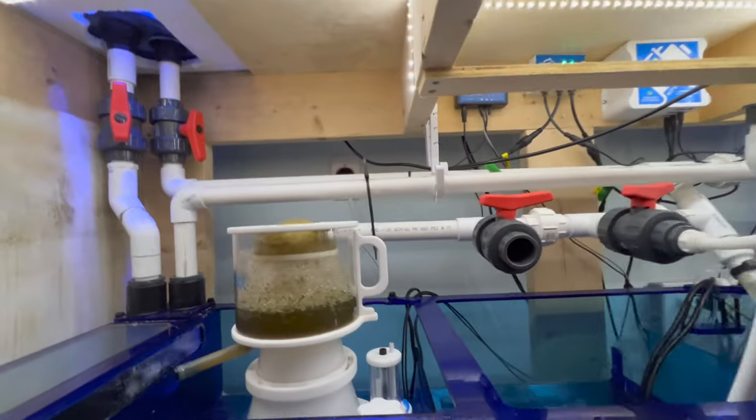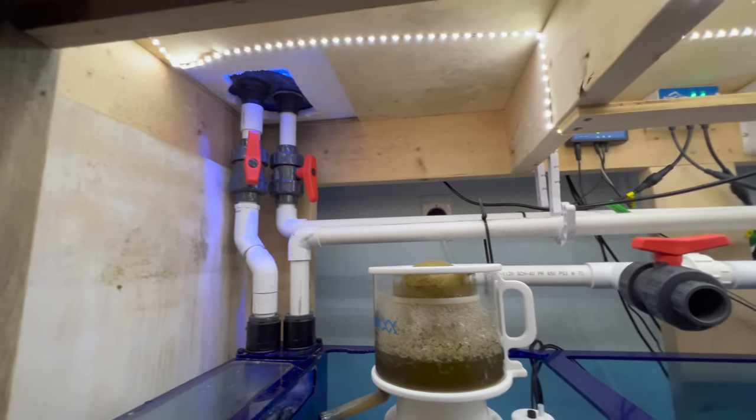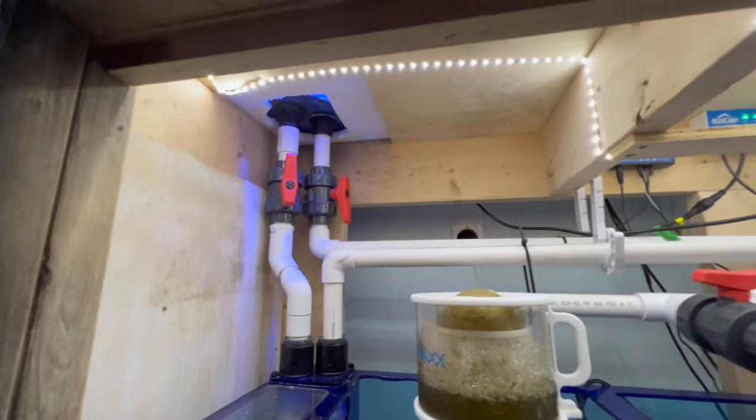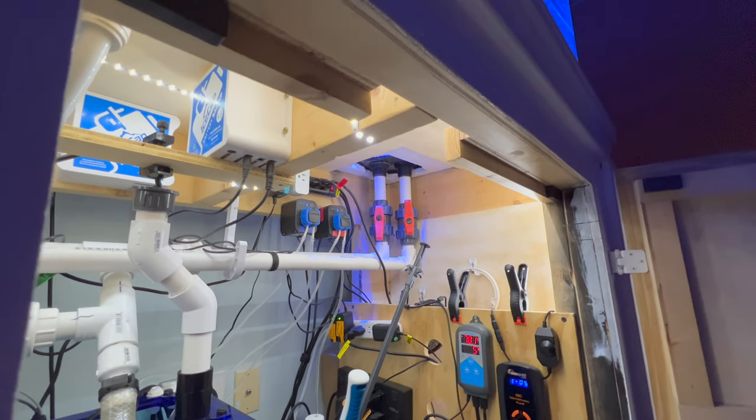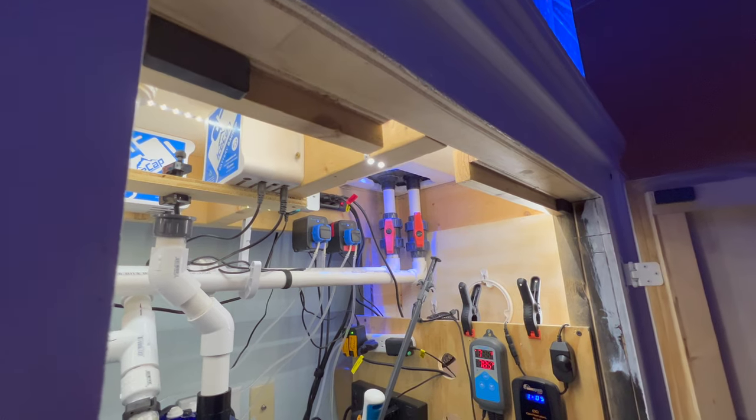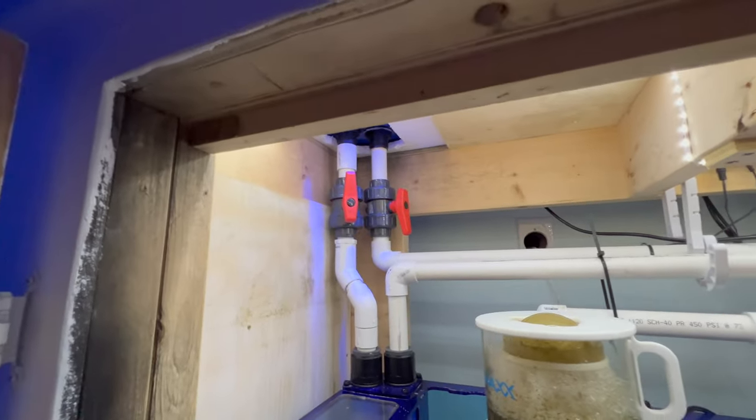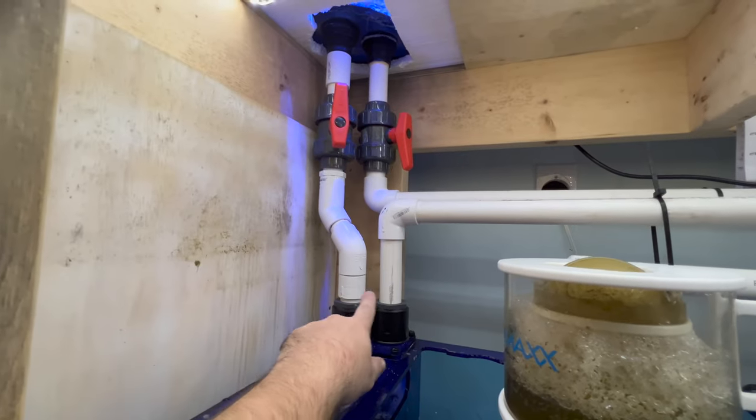I have it plumbed with the dual overflow. I have a safety valve shutoff ball valve at each corner. One goes with the return line in and the other comes with the drain down. So here's one drain here, here's the other drain here.